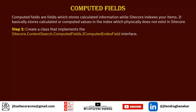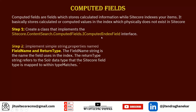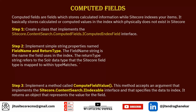How do you create a computed field? Step 1: create a class that implements the interface `Sitecore.ContentSearch.ComputedFields.IComputedIndexField`. Step 2: implement the simple string properties `FieldName` and `ReturnType`. `FieldName` is the name of the field used in the index, and `ReturnType` maps to the Solr data type via the type matches configuration.